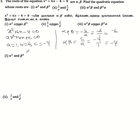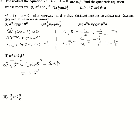Now for the roots alpha² and beta², first find the sum of roots: alpha² + beta². Using the identity alpha² + beta² = (alpha + beta)² - 2·alpha·beta, we get (-6)² - 2(-4) = 36 + 8 = 44. So the sum of roots is 44.